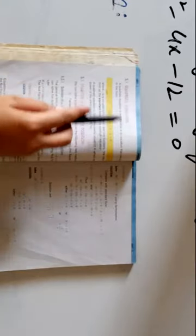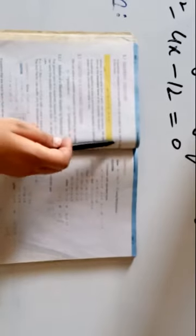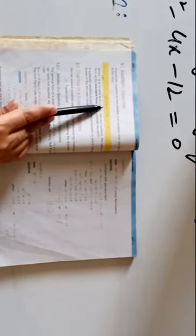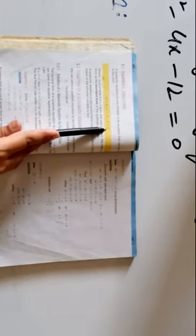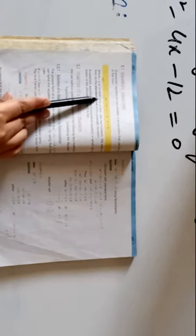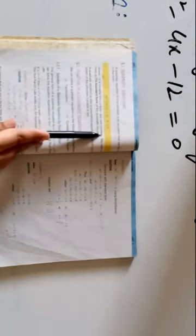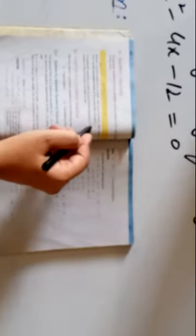Where x is a variable and a, b, and c are real numbers, and a is not equal to 0. This form is called the standard form of the quadratic equation. Up to here, the definition of quadratic equations should be clear.